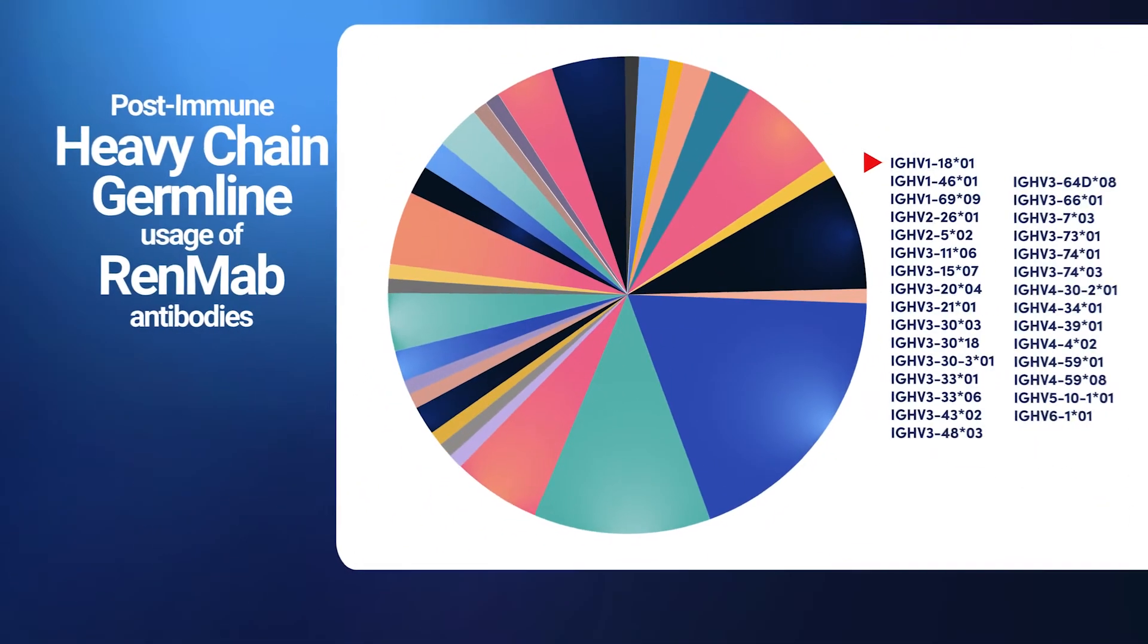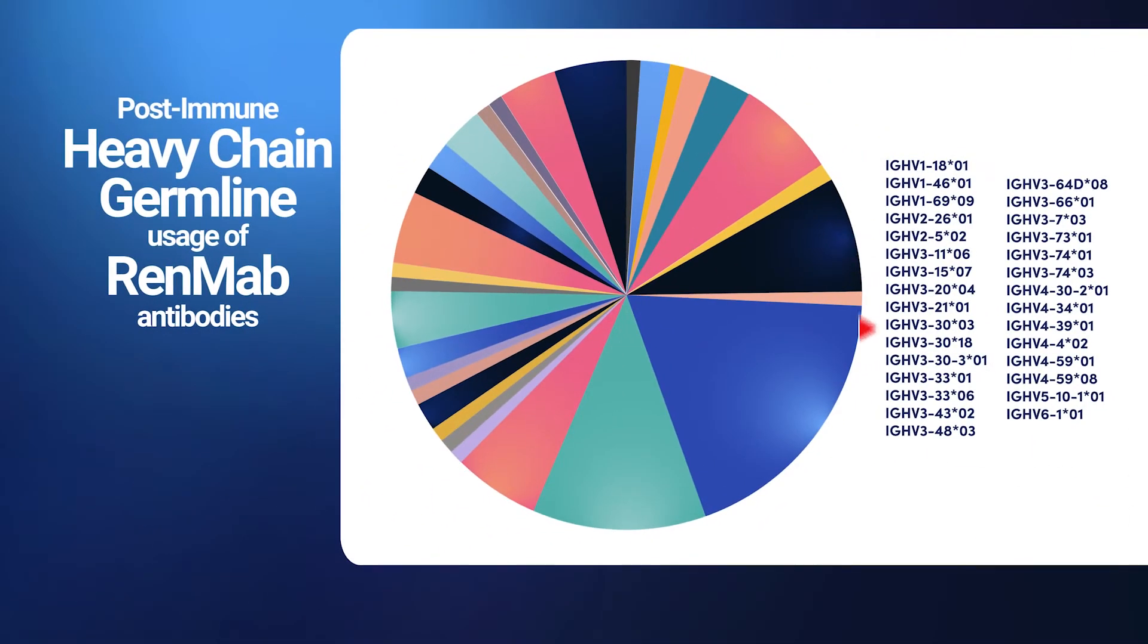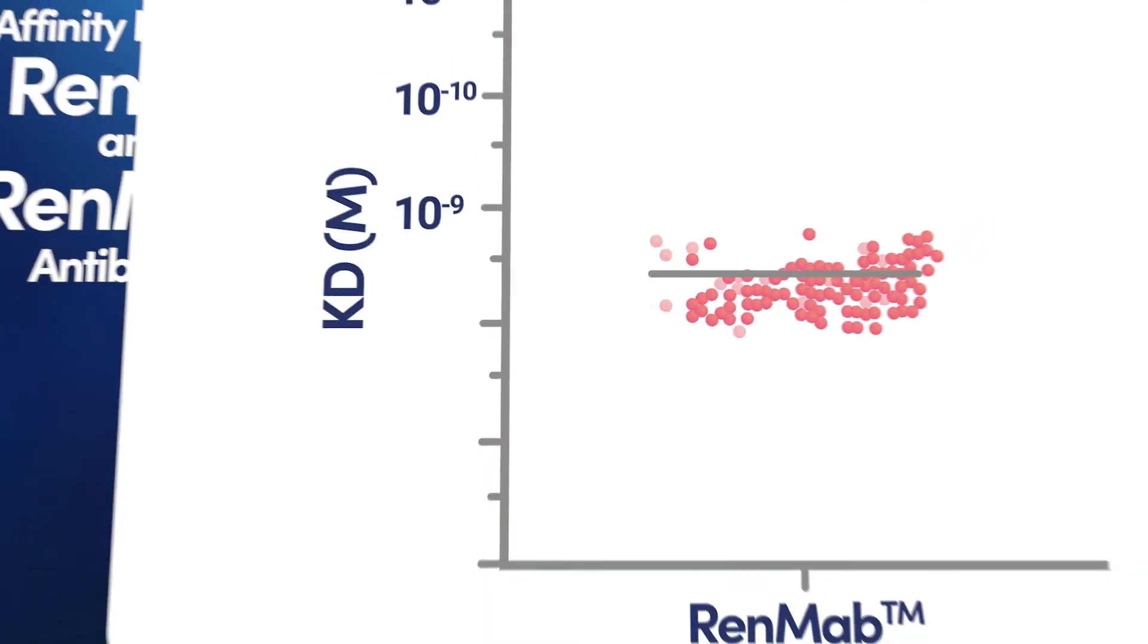The first generation model, RUNmab, expresses the entire heavy chain and kappa-light chain gene repertoire and generates antibodies with affinity to antigens in the nanomolar range.